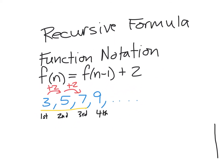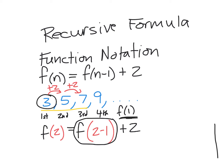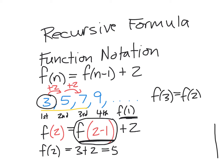To find term number two — F of 2 — we evaluate F of 2 minus 1, which is F of 1. The first term was 3, so F of 2 equals 3 plus 2, which gives us 5. For the third term, we take the second term, which was 5, and add 2: 5 plus 2 equals 7, our third term.